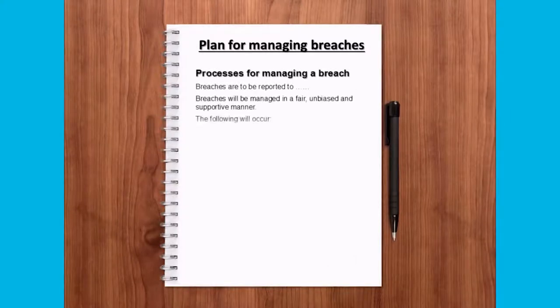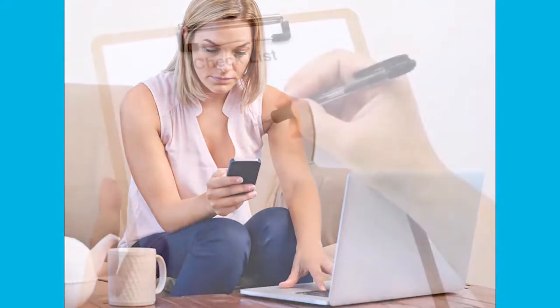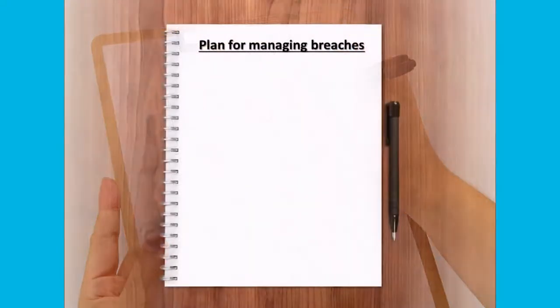Another aspect which you'll need to cover in your plan are the processes for managing the breach, including the process for reporting breaches. It is imperative that all people are clear on who they should contact and how they should progress a concern regarding a breach. It is equally important that those responsible for dealing with the breach are aware of the correct process to follow.